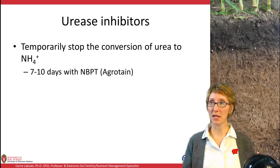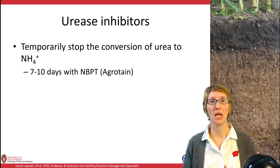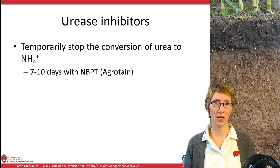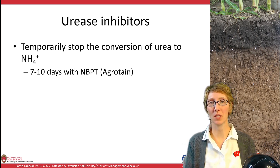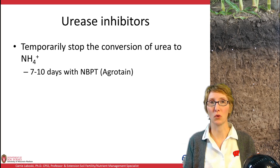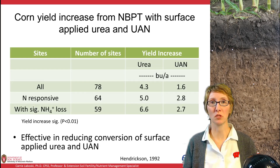Urease inhibitors temporarily stop the conversion of urea to ammonium, giving about a seven-day window with Agrotain. So if you have surface broadcast urea you're not incorporating and you're relying on rainfall, instead of needing a quarter inch of rain within two days, you can push that to seven or maybe ten days. For spring applications of surface applied urea in Wisconsin, there's a pretty good chance of getting a quarter inch of rain within a week or ten days — so that's where urease inhibitors have their best use: surface applied urea or UAN solutions.